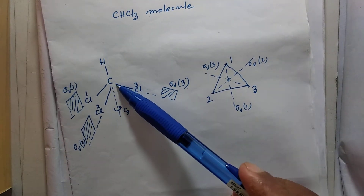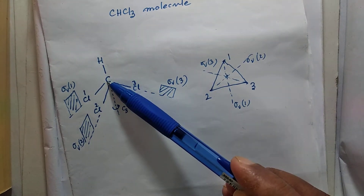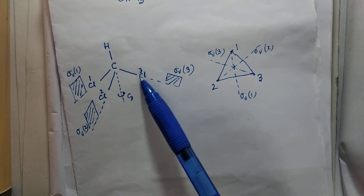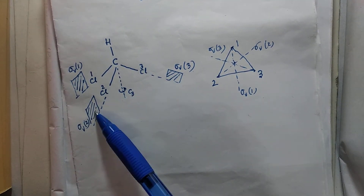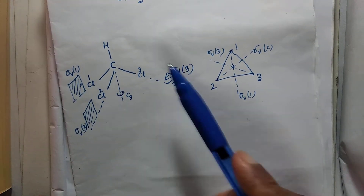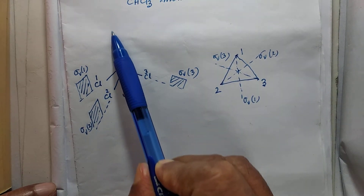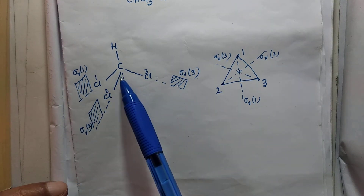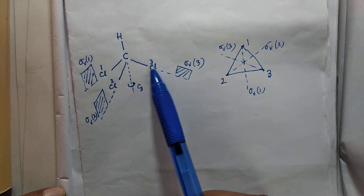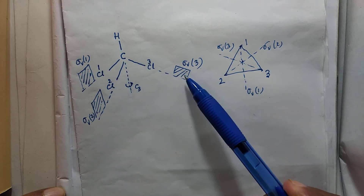Along each C-Cl bond and the C-H bond, there is a plane of symmetry. For example, this is one plane of symmetry, this is the second, and this one is the third. They are all vertical planes, and all of them contain this C-H bond as a common line. The atom labels for chlorine are one, two, and three, and the vertical planes are designated as σV1, σV2, and σV3.